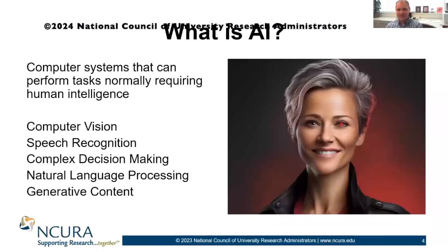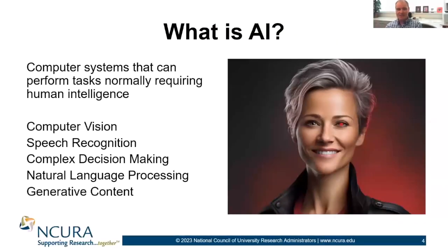So what is AI? The short answer — that ChatGPT helped me write — is that AI are computer systems that can perform tasks that normally require human intelligence. And these aren't just computer systems with your traditional if-else logic.